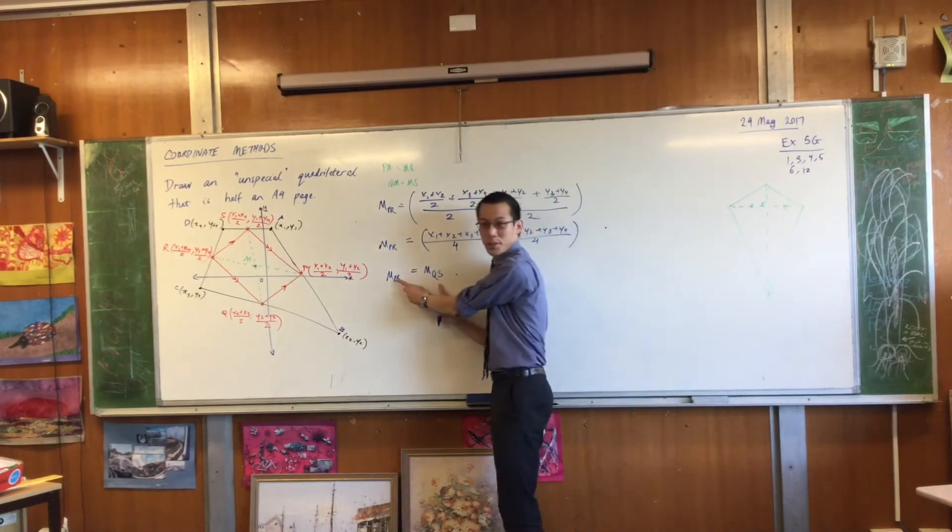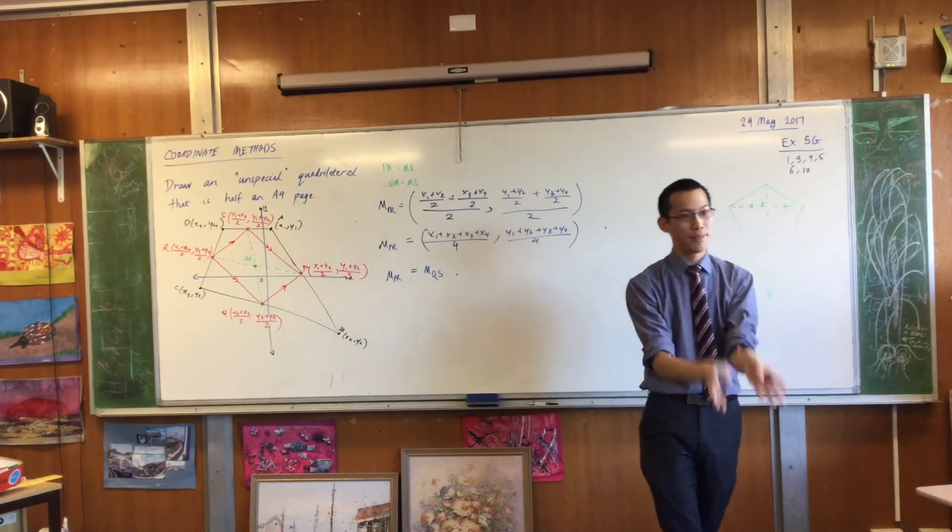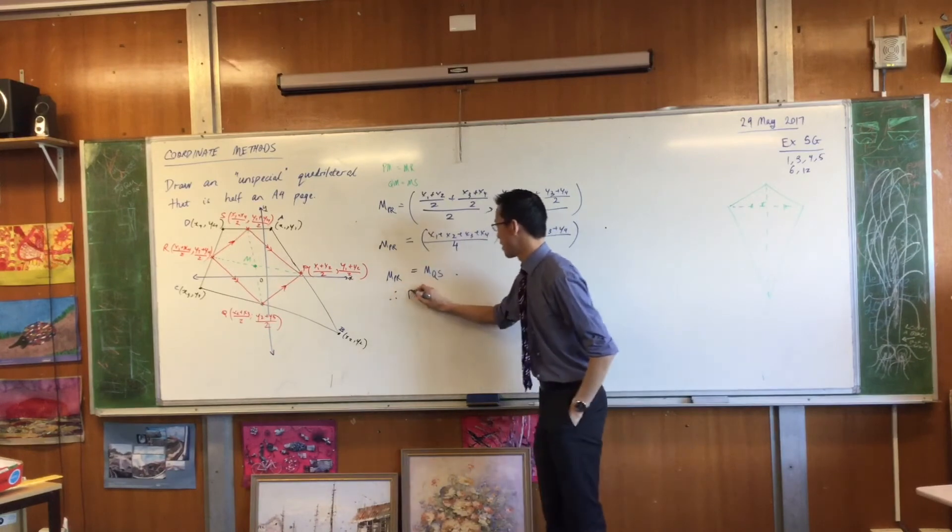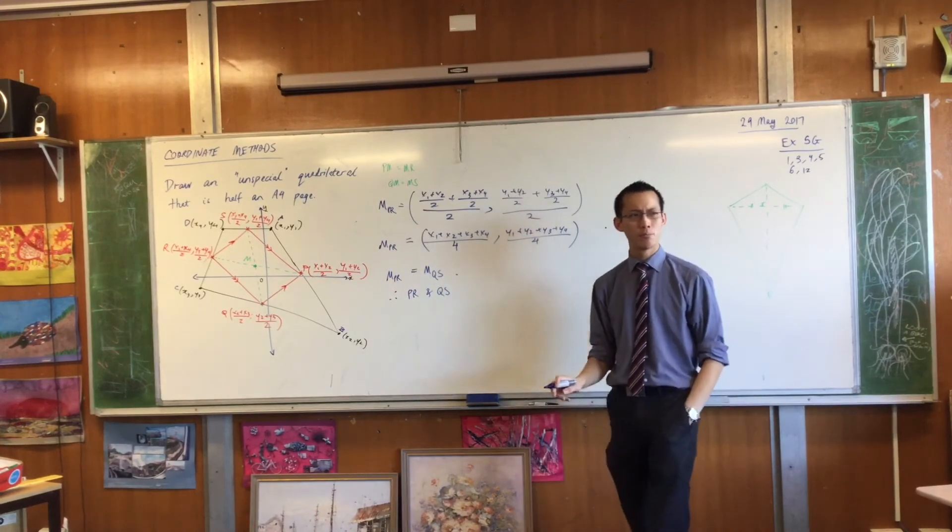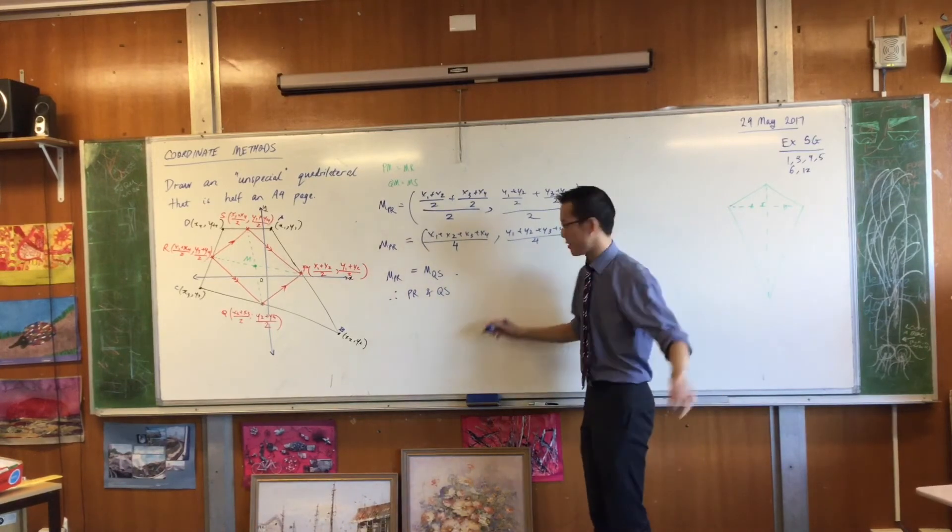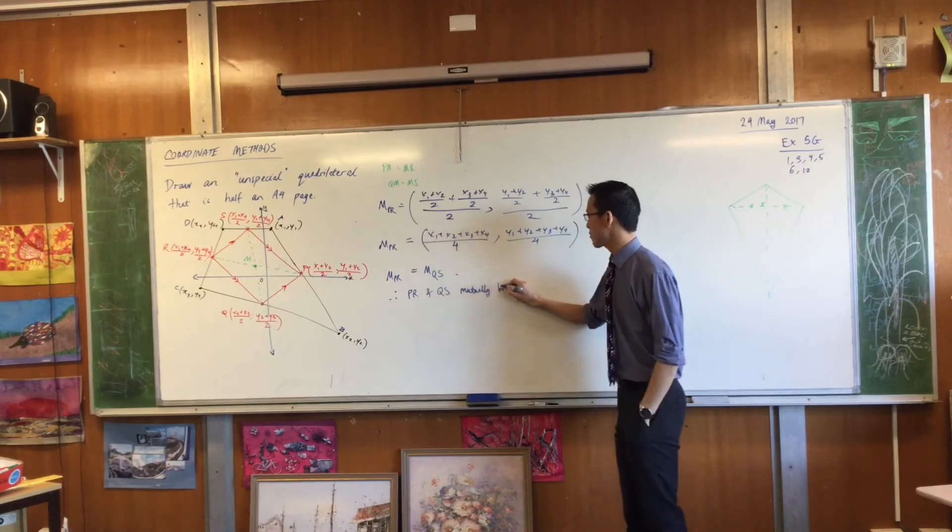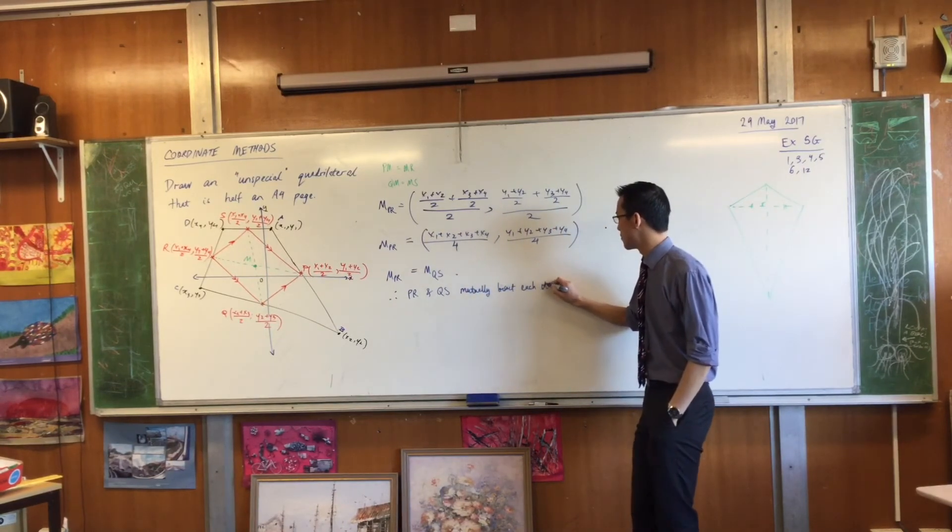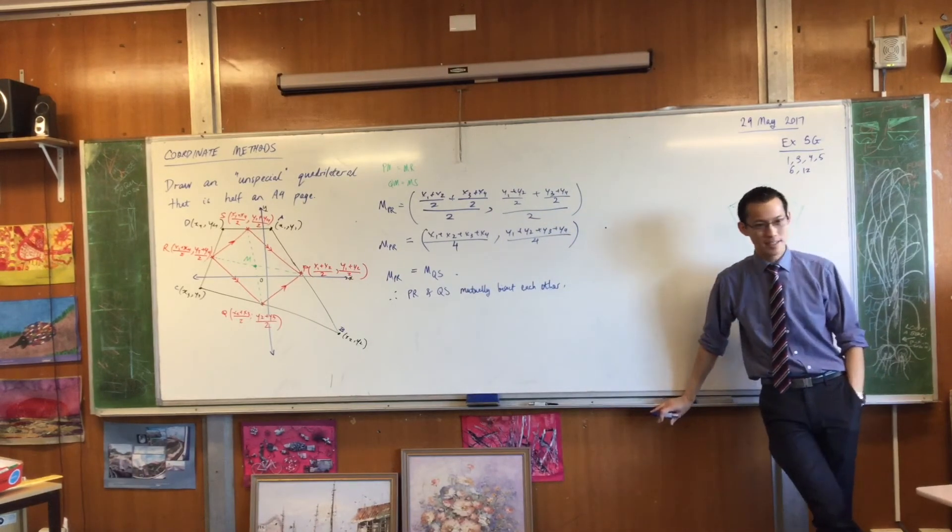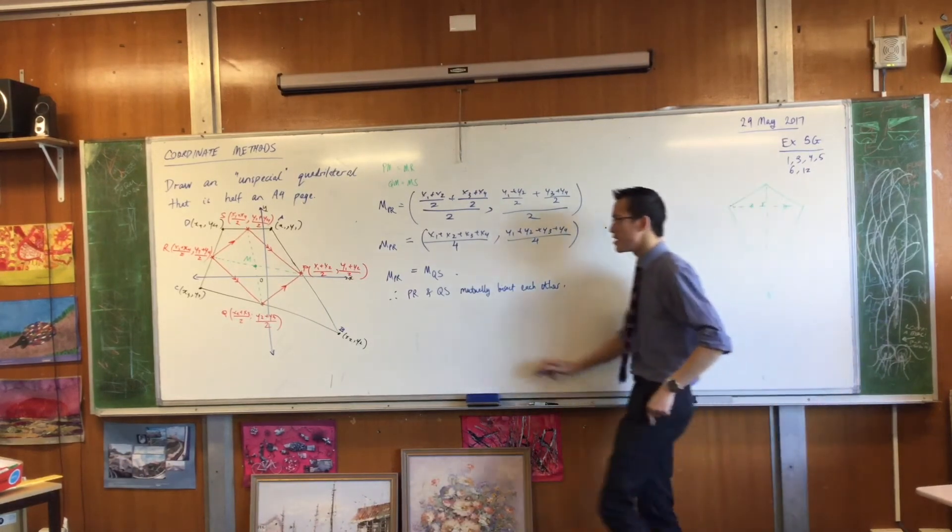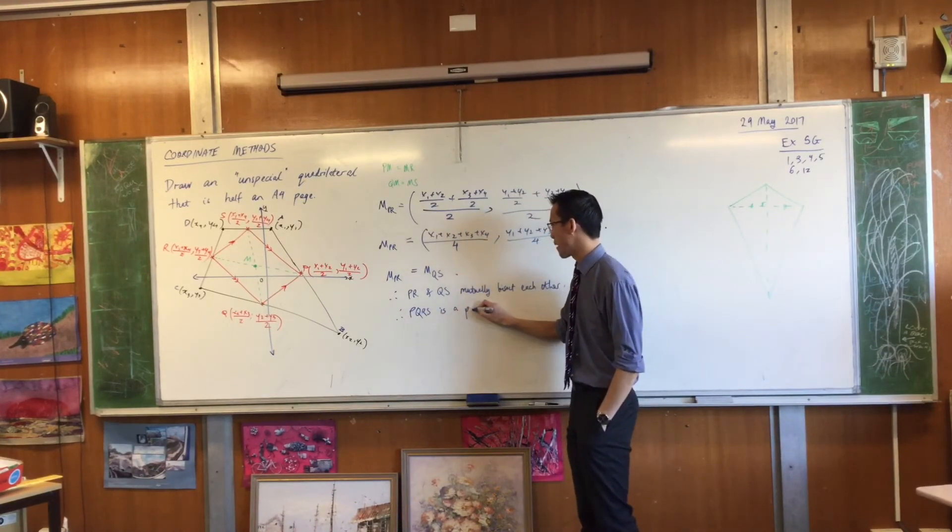So, if you've got two intervals and their midpoints are the same place, therefore, PR and QS, what was that phrase I had before? What did they do to each other? They mutually bisect. And you don't need to fuss around with any gradients or distances anymore. That's it. Therefore, PQRS is, it has to be, a parallelogram.